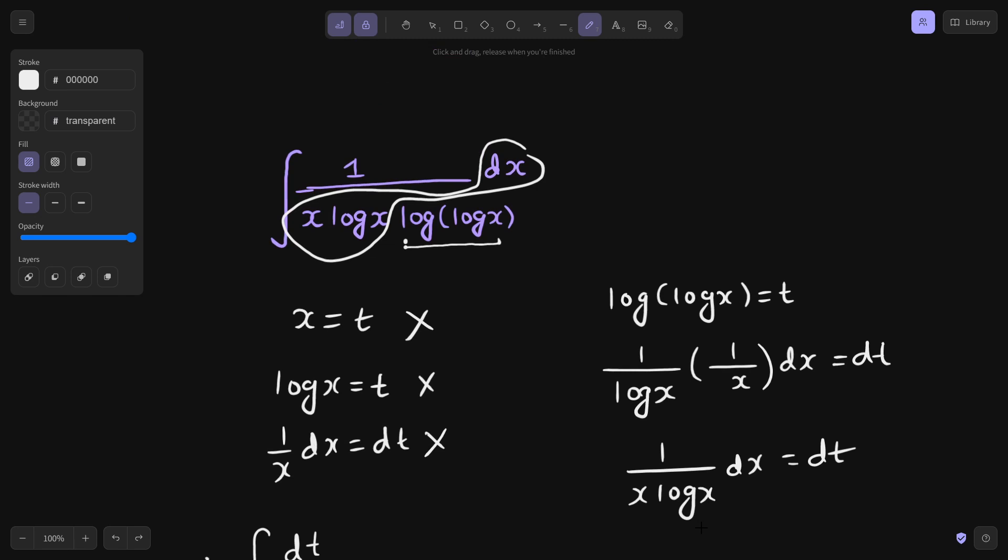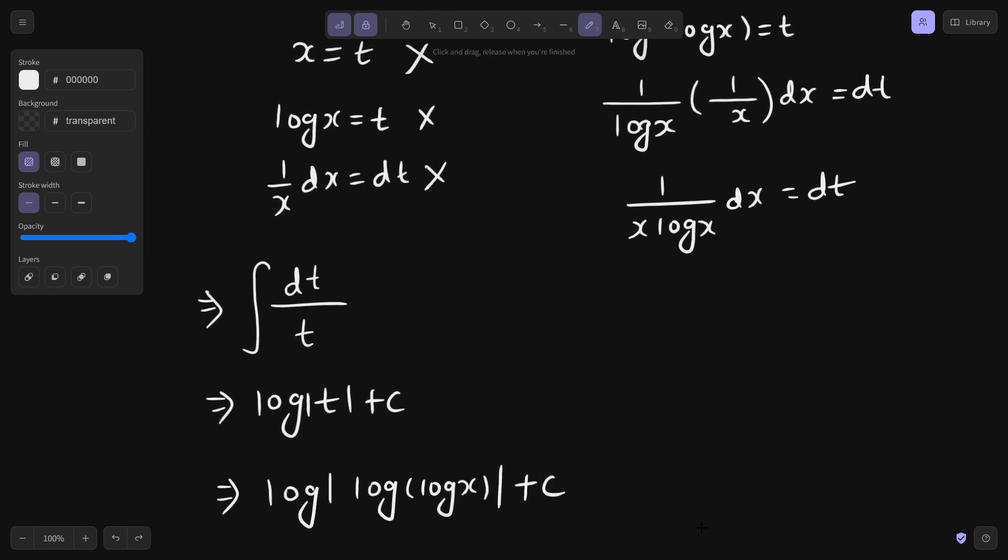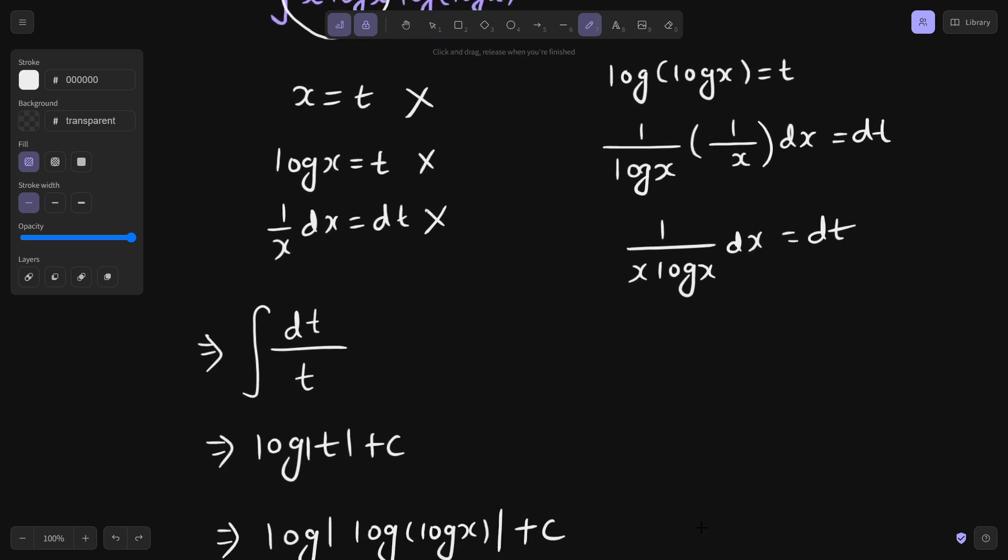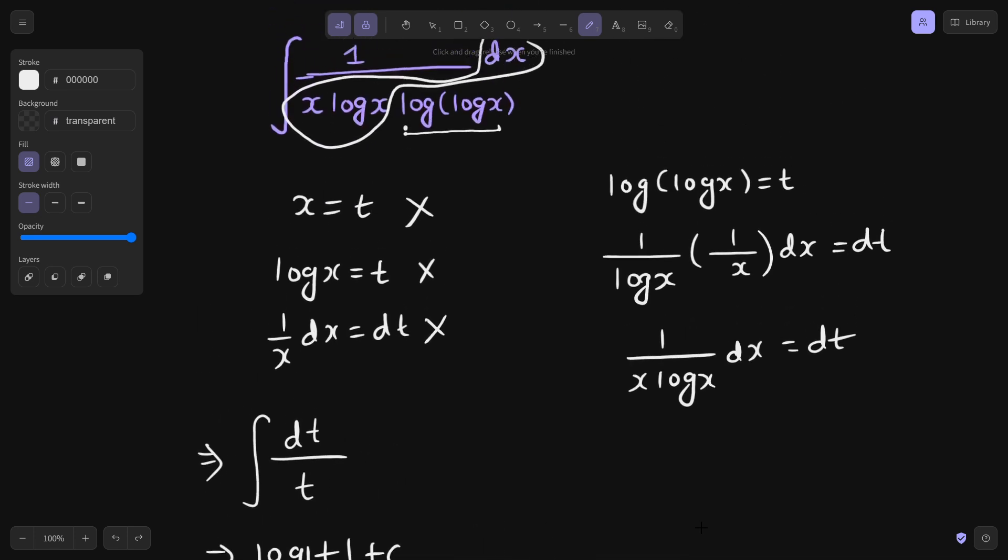So, in this question we tried out different things but it did not work for us. So, finally we took log log x as t and that was simplifying our problem. We ended up taking log log x as t and your final answer is log of log of log x plus a constant c.